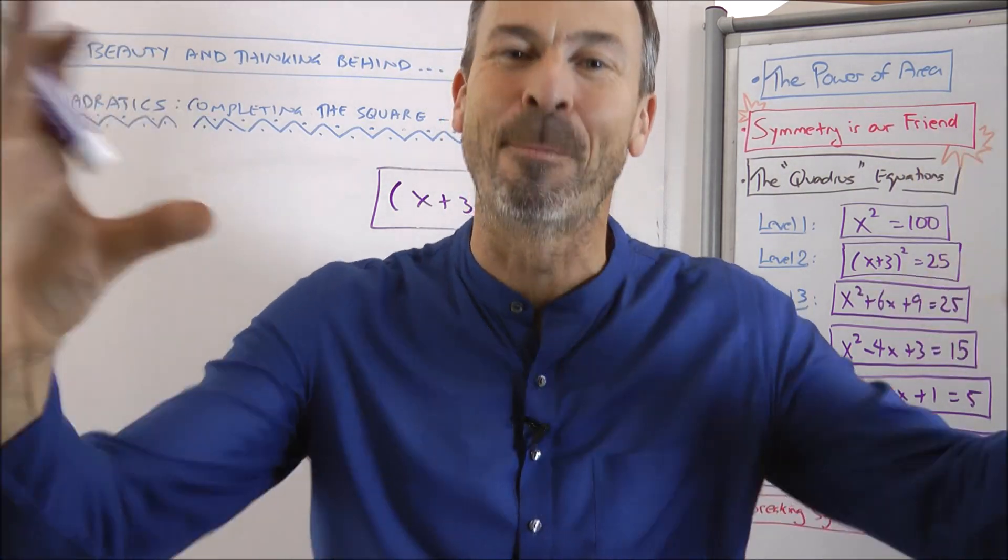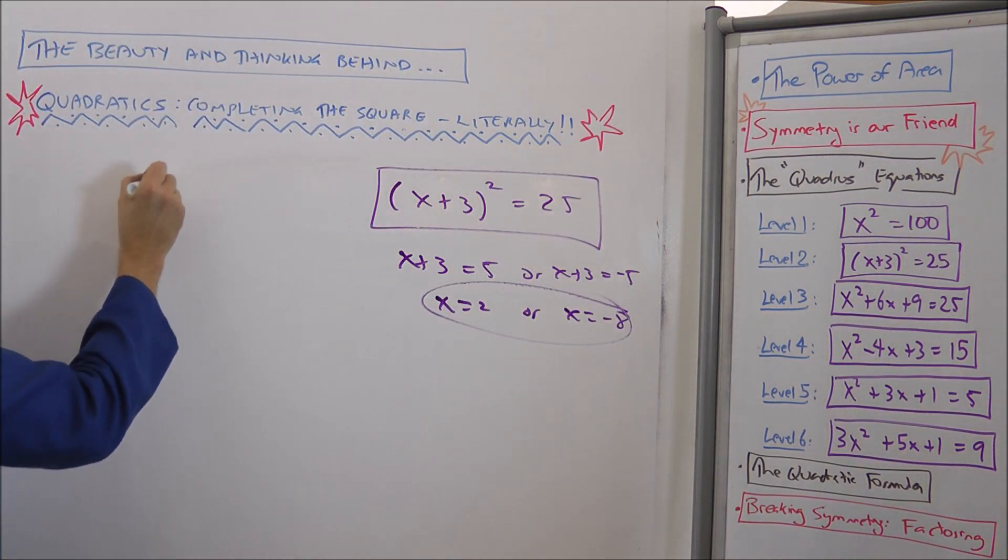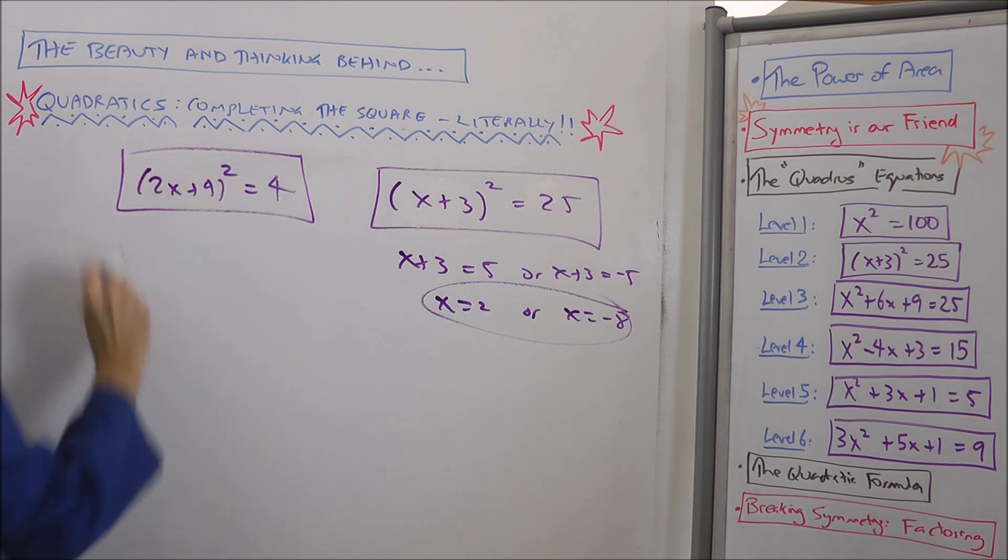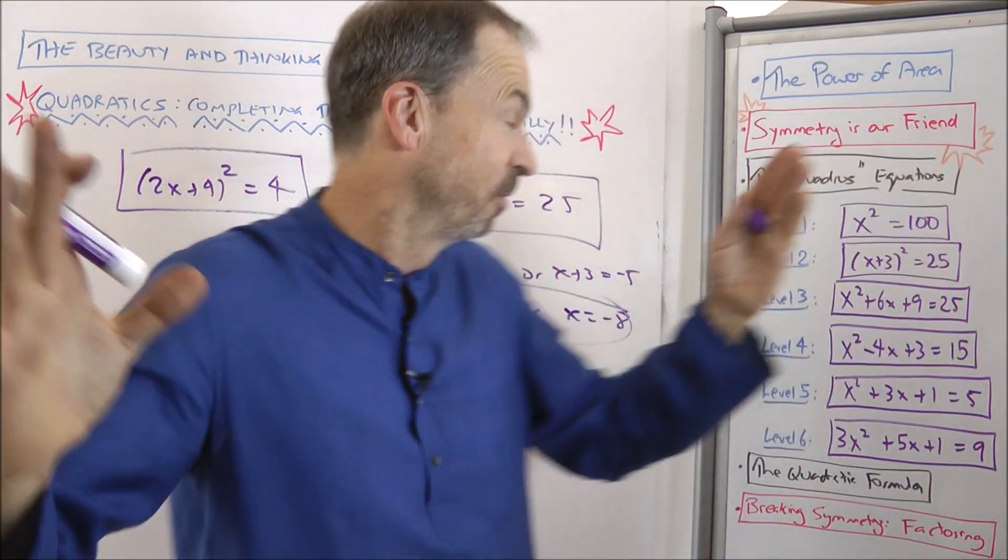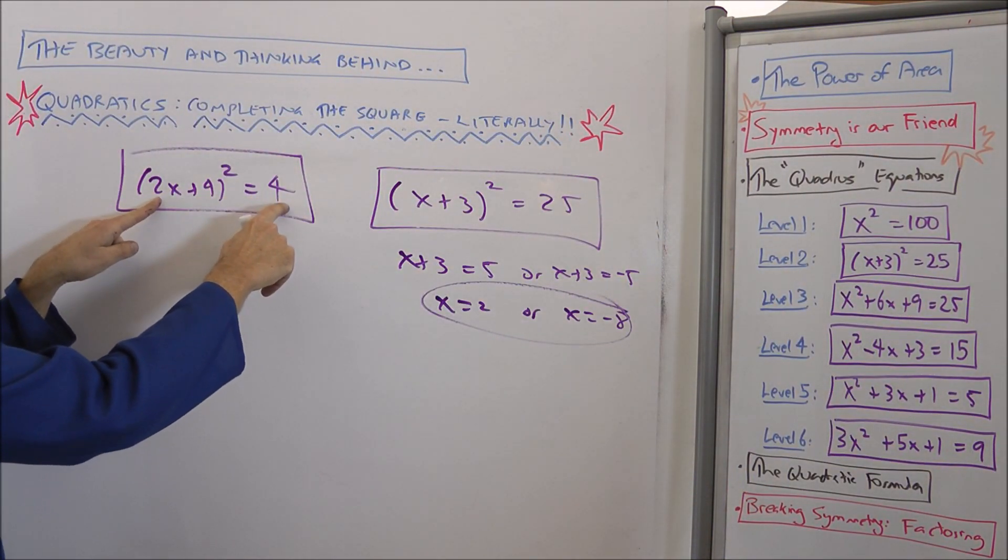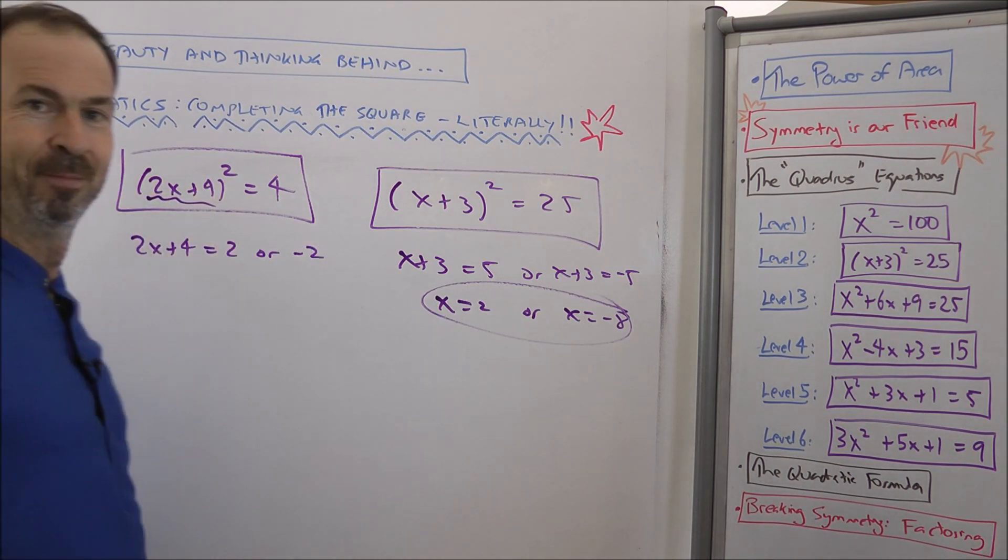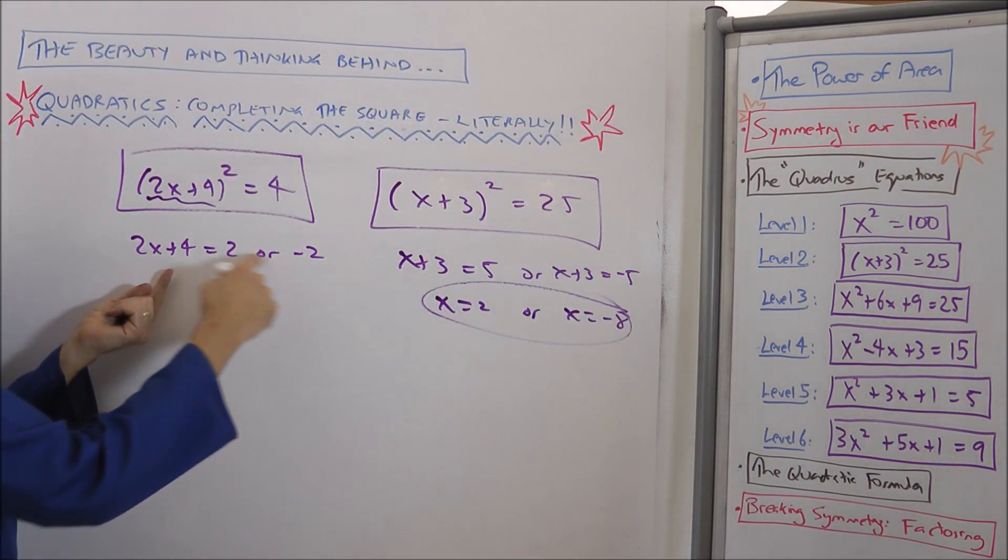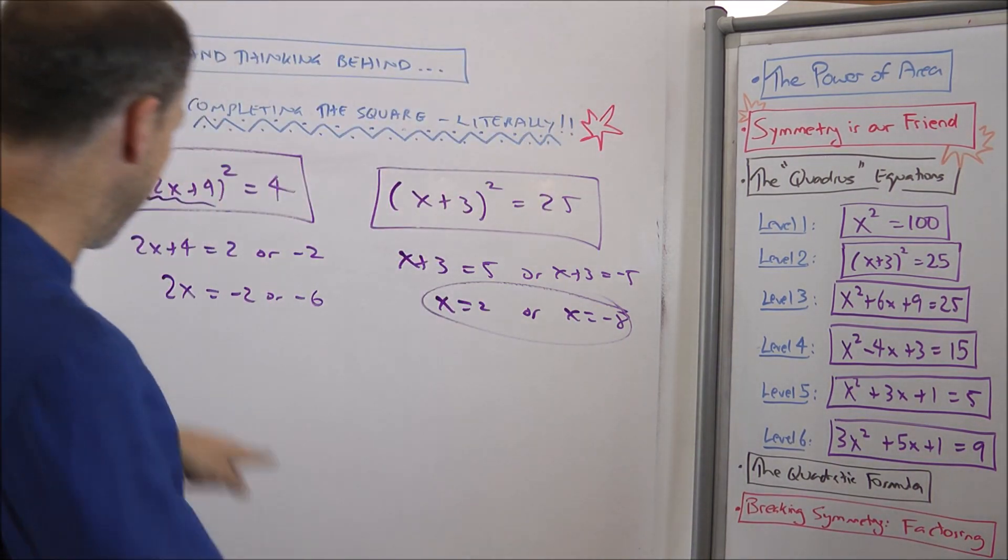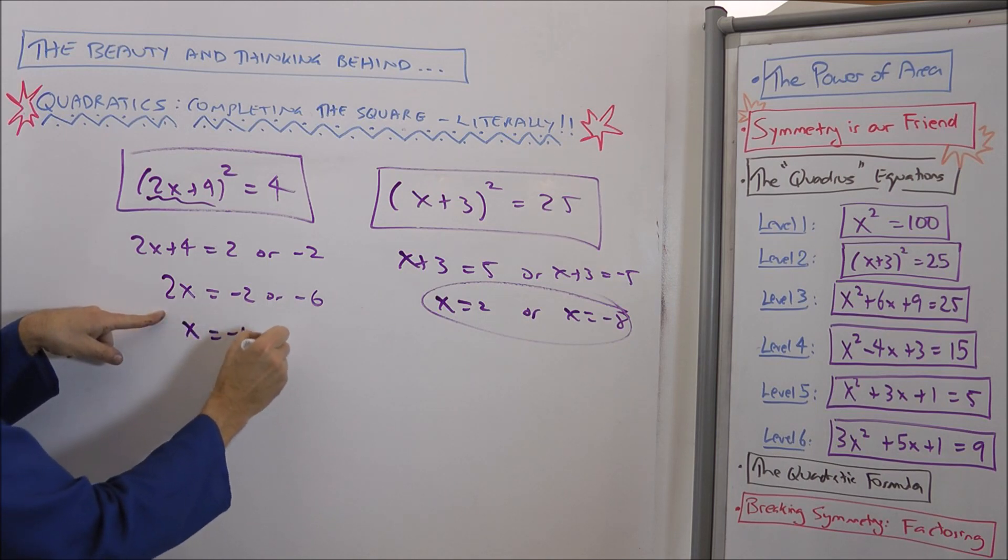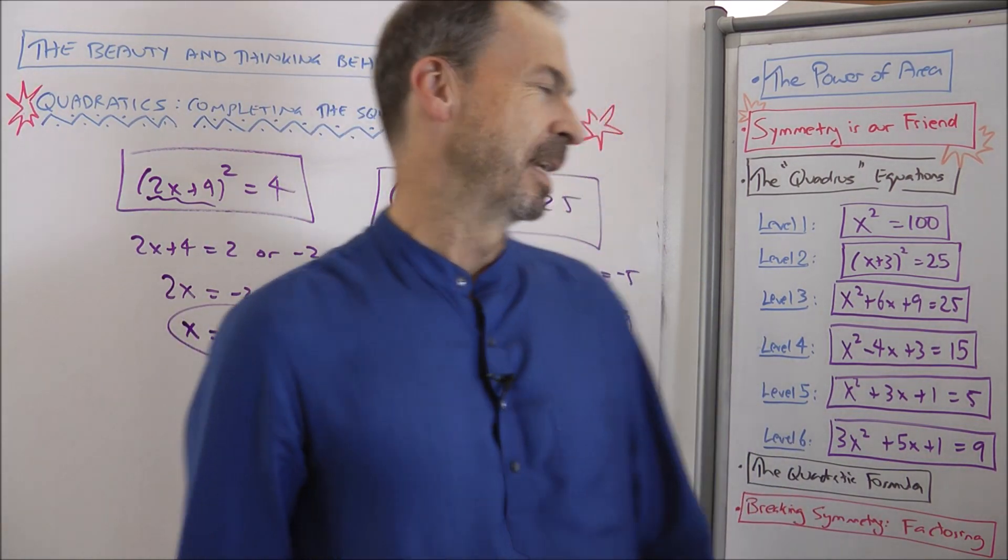That's all level two is. To realize something squared is a number. Pretty level one in disguise with a slight complication. In fact, let's do another one. How about (2x + 4) squared equals four. Let's solve that quadratic equation. Well, something squared is four. So I said the word square. So I'm doing a square equation right now. So my something better be two or negative two. And what's my something? It's 2x plus four. It's either two or it's negative two. But I really wanted x all by itself. So let's subtract four from everything. So 2x must be negative two or negative six. You with me? And let's divide everything by two. x is negative one or negative three. Beautiful.